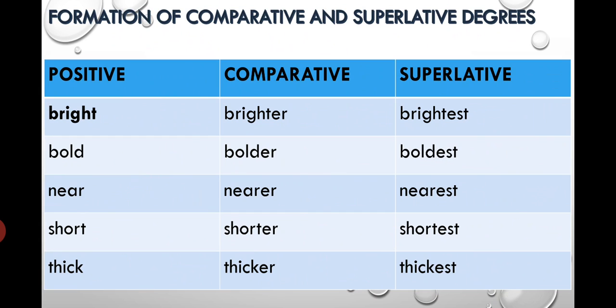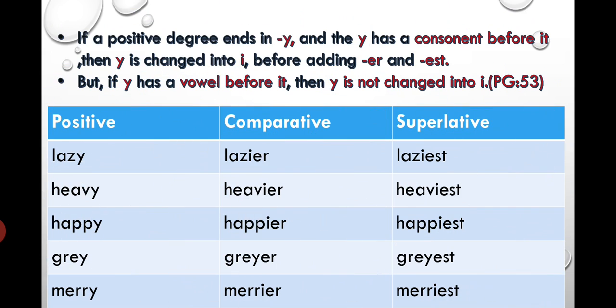How does formation happen? Positive degree: bright. Comparative: we will add er, and superlative we will add est. So it will become bright, brighter, brightest. Bold, bolder, boldest. It's very easy. Positive same as it is. You will write the positive as it is and add er or est behind it.